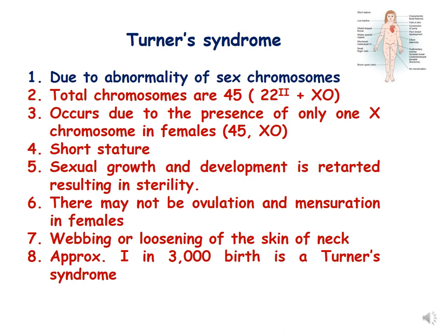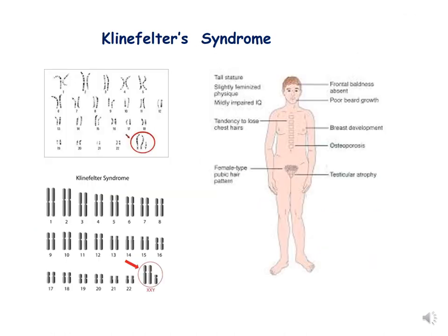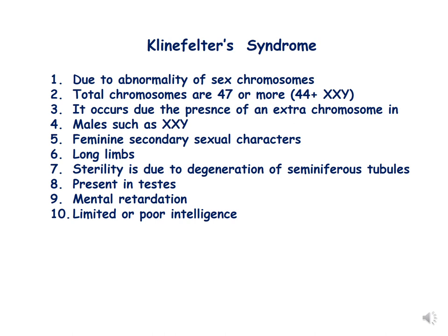Approximately 1 in 3000 births is Turner syndrome. The third syndrome is Klinefelter syndrome, represented by the XXY condition due to abnormality of sex chromosomes. Total chromosomes are 47, with the condition being 44 plus XXY — an extra chromosome in males. They have feminine secondary sexual characters, long limbs, sterility due to degeneration of seminiferous tubules in the testes, and mental retardation with limited intelligence.